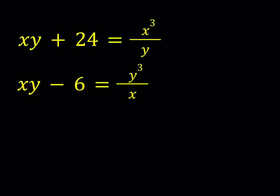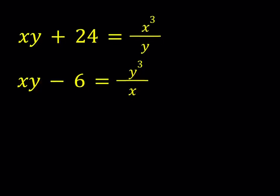One method you could probably use is isolate the xy and set them equal to each other and try to get something from there, or you could try cross multiplication. But the approach that I'd like to be using here is a little different. I'll multiply these two equations.